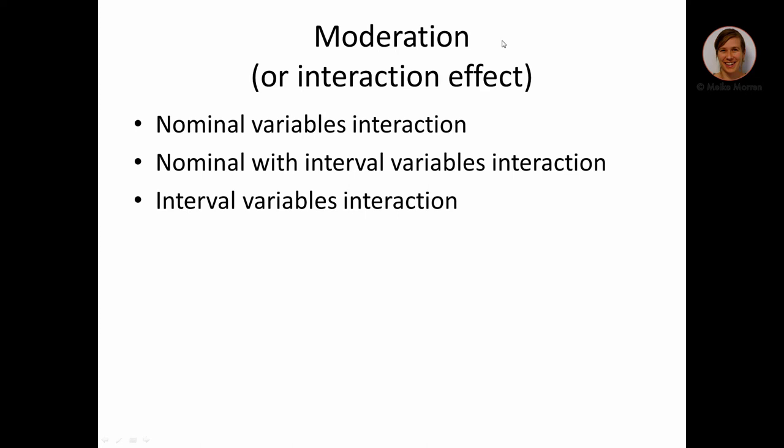Moderation, or some people call it an interaction effect, can be shown within two nominal variables — for instance, country and type of movie — or an interaction between country and budget, which is an interval variable, or between two interval variables. We will discuss all of these in this video.